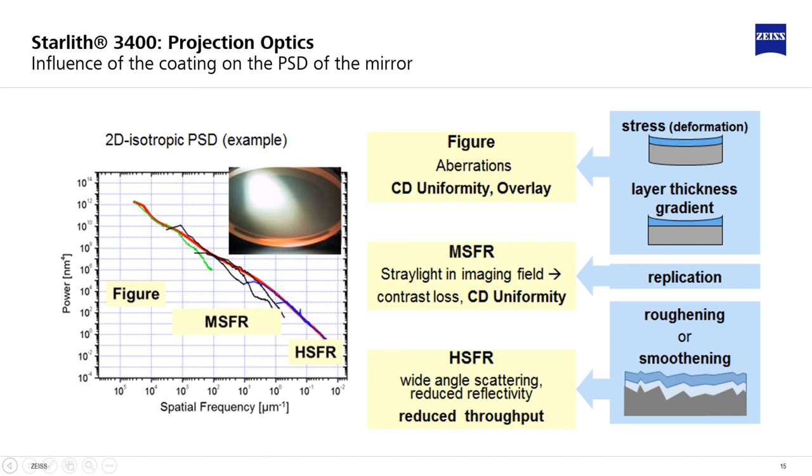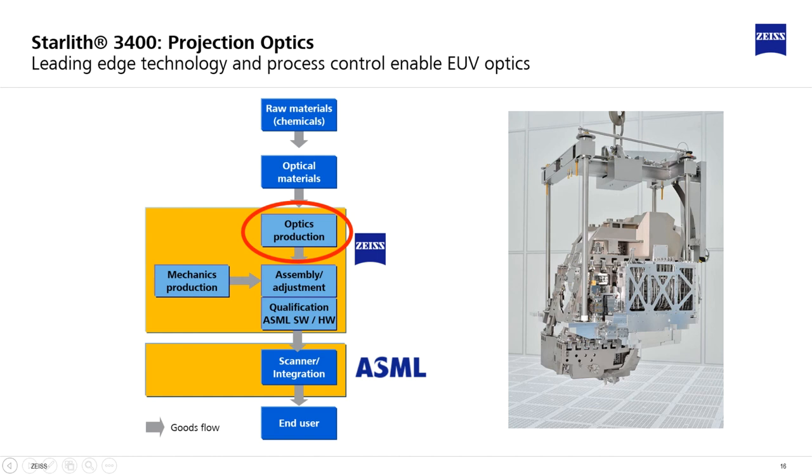The EUV coating can change these properties. In the MSFR, the PSD is largely replicated by the coating, while the HSFR is subject to roughening or smoothing depending on the coating process parameters. Long-range figure errors are induced by the coating via the coating stress and the lateral layer thickness gradients.